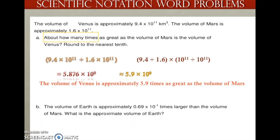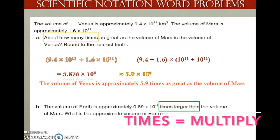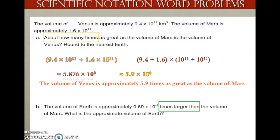Let's look at Part B. The volume of Earth is approximately 0.69 times 10 to the negative 1 power times larger than the volume of Mars. What is the approximate volume of Earth? The keyword 'times larger' tells us to multiply. So I have: volume of Earth equals volume of Mars times 0.69 times 10 to the negative 1 power.